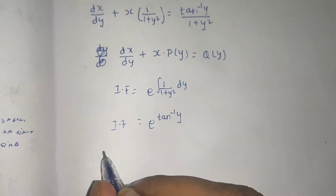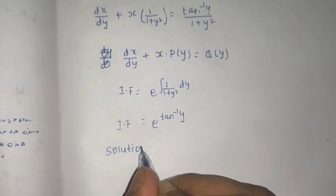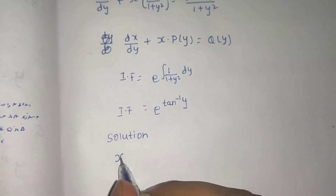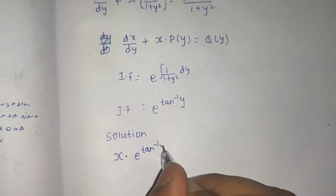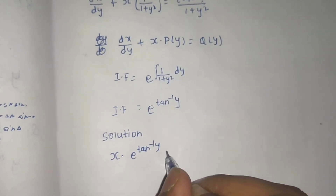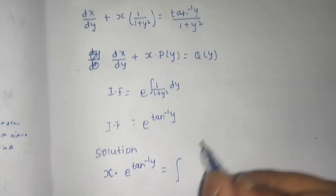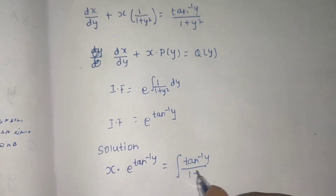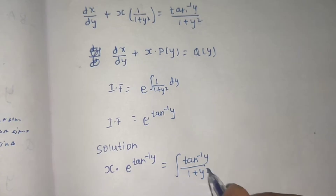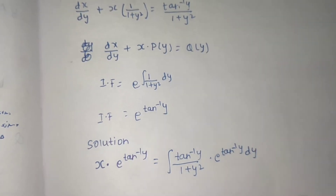The solution of this differential equation is given by x times the integrating factor e^(tan⁻¹y) equals the integral of Q(y) times e^(tan⁻¹y) dy.